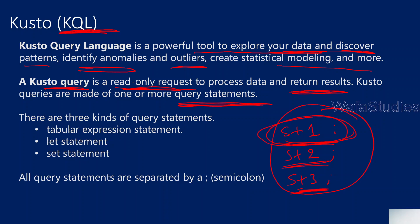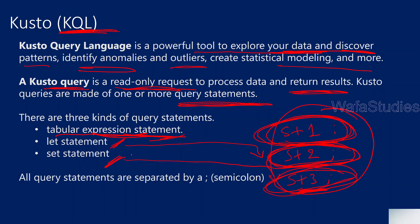A statement may be a select query on a table, or declaring a variable, or setting a value into a parameter. The let statement is like declaring a variable, and the set statement is like setting a value to it. There are three types of statements in Kusto: tabular expression statement, let statement, and set statement. These statements are separated by a semicolon.